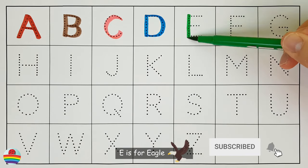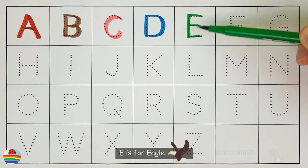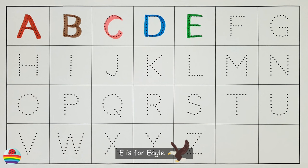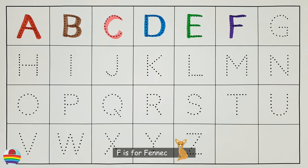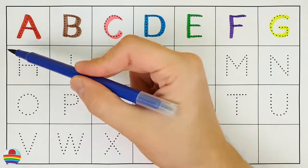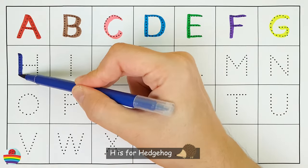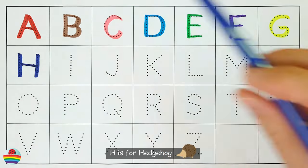E. E is for eagle. F. F is for fennec. G. G is for gorilla. H. H is for hedgehog.